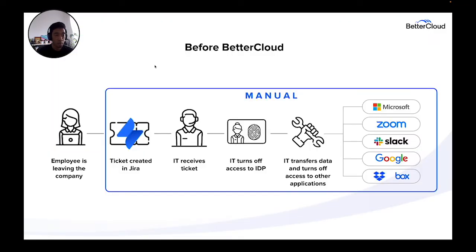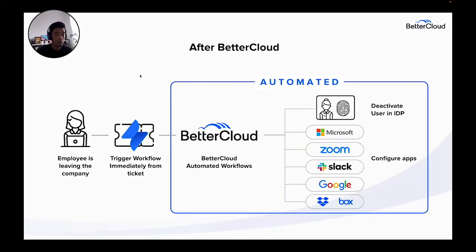Without a SaaS management platform like BetterCloud, this process can be very manual and error-prone. You'll typically receive an offboarding request to comb through every SaaS application the employee has access to in order to complete the offboarding. With BetterCloud, your common offboarding steps can be automated to save time and reduce the risk of missteps. The same HR ticket submitted to IT can be used to trigger a BetterCloud workflow which can handle the SaaS deprovisioning for you, with granular actions spread across multiple applications.